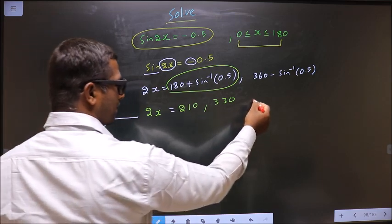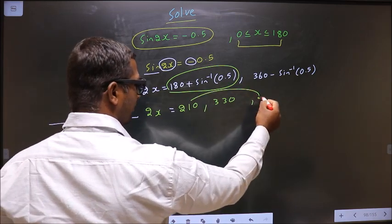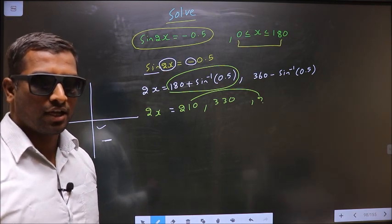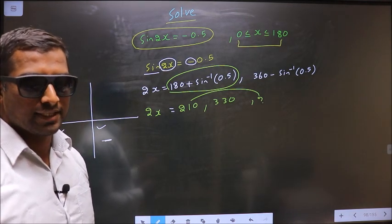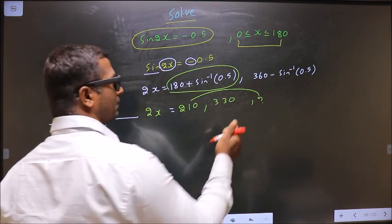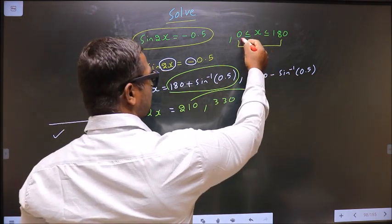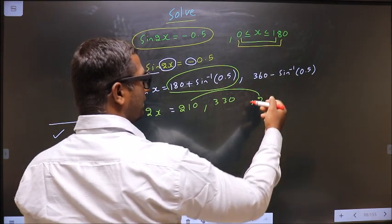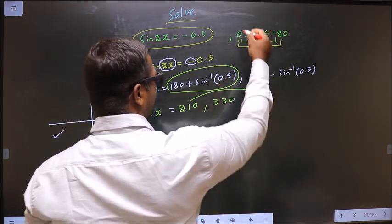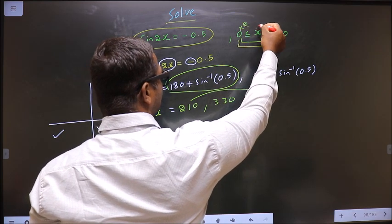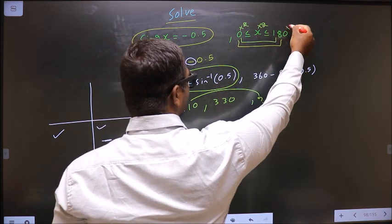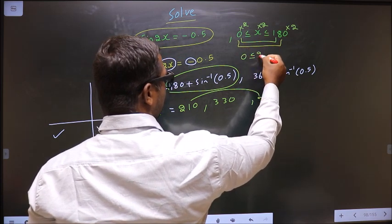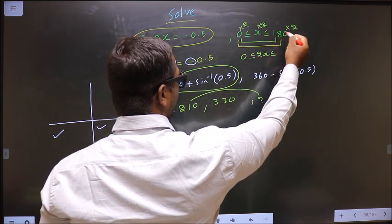Now how do you decide whether you need to find more angles for 2x or not? How do you decide based on this one? See here, x lies from 0 to 180, so in what interval does 2x lie? To get that, you multiply by 2.